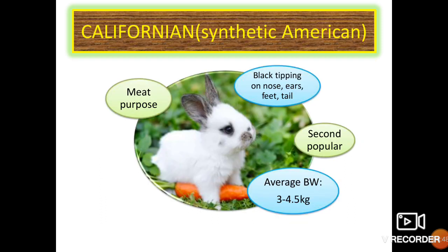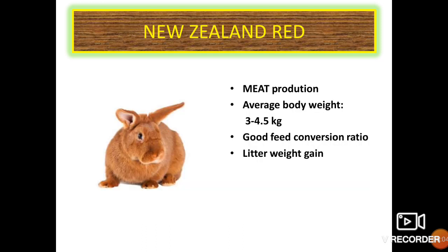The Californian Synthetic American breed is reared for meat purpose and is the second most popular breed after New Zealand White. The average body weight is 3 to 4.5 kg and it has black tipping on the nose, ears, feet and tail. The New Zealand Red is used for meat production with an average body weight of 3 to 4.5 kg and has good feed conversion ratio.